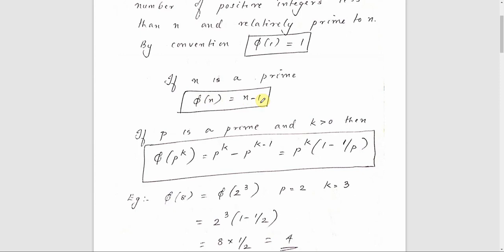This is the first case: if n is a prime, then phi of n is equal to n minus 1. This is the first equation to remember for calculating the value of Euler's totient function.